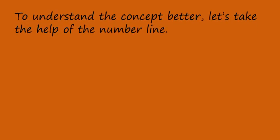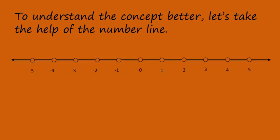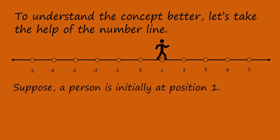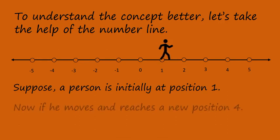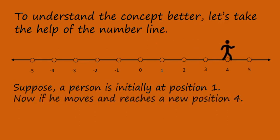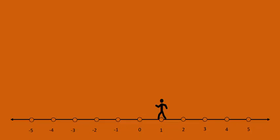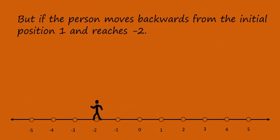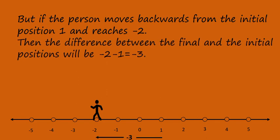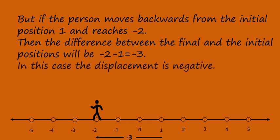To understand the concept better, let's take the help of the number line. Suppose a person is initially at position 1. Now, if he moves and reaches a new position 4, then the difference between the final and the initial position is 3, which is positive. Hence, the displacement of the person is positive in this case. But if the person moves backwards from initial position 1 and reaches negative 2, then the difference between the final and initial position will be negative 2 minus 1, that is equal to negative 3. In this case, the displacement is negative.